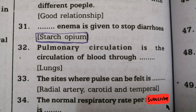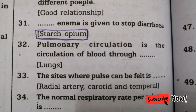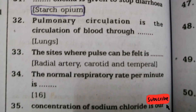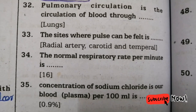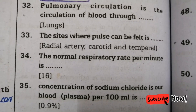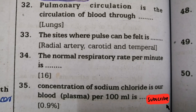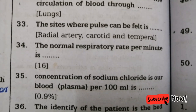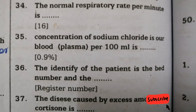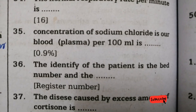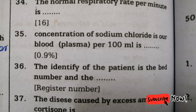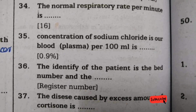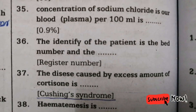Next question: the sites where pulse can be felt — answer is radial artery, carotid artery, and temporal artery. Thirty-fourth question: the normal respiratory rate per minute — answer is 16. Next question: concentration of sodium chloride in our blood plasma per 100 ml — answer is 0.9%. Thirty-sixth question: the identity of the patient is the bed number and the — right answer is registration number.